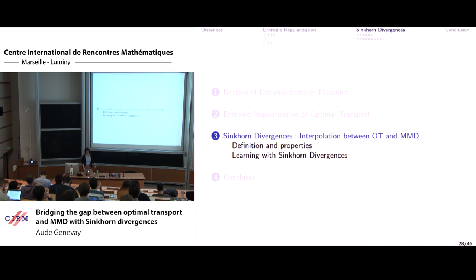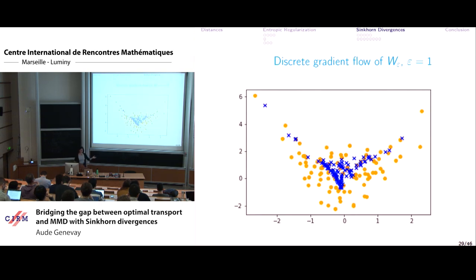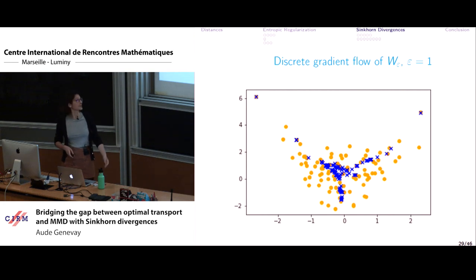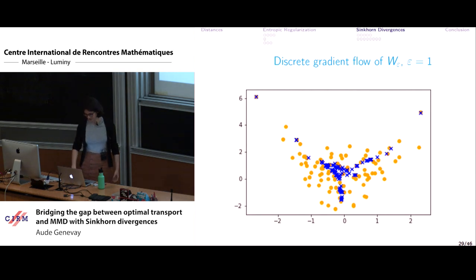Now that we have a regularized Wasserstein distance with better statistical and computational properties, we can use it for learning problems. Consider the same point cloud fitting problem as before. When we use regularized Wasserstein distance, the blue point cloud collapses to the mean of the orange point cloud. We were disappointed by this.